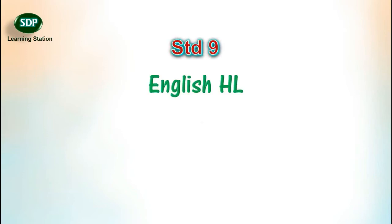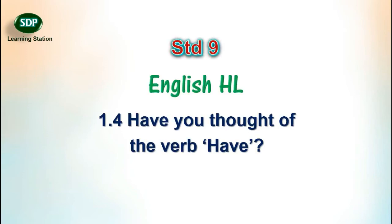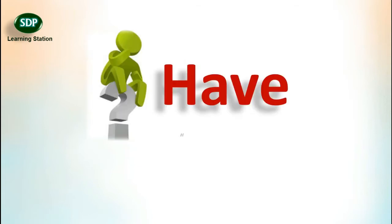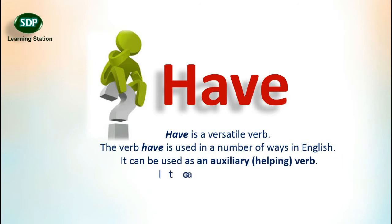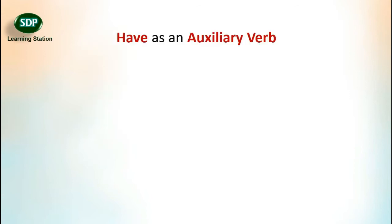Friends, welcome. Today we are going to study 1.4. Have you thought of the verb 'have'? The different uses of verb 'have'. Have is a versatile verb. The verb 'have' is used in a number of ways in English. It can be used as an auxiliary verb, meaning a helping verb. It can also be used as a main verb.